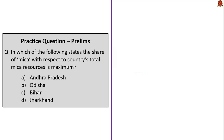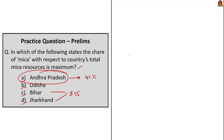The next question asks which state has the maximum share of mica resources. Bihar and Jharkhand together account for only 3% of mica resources. Andhra Pradesh accounts for 41% — the maximum. The correct answer is option A: Andhra Pradesh. The second highest is Rajasthan, followed by Odisha.